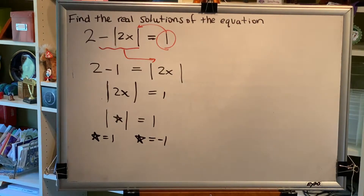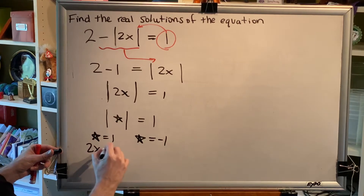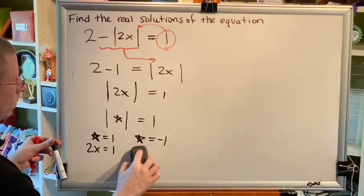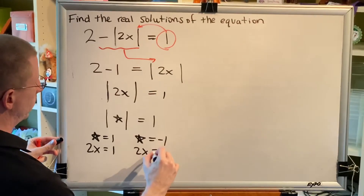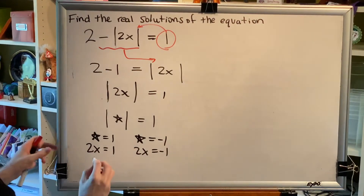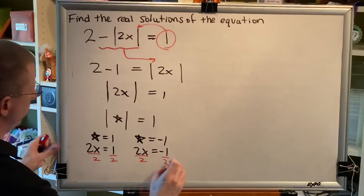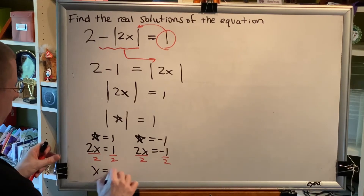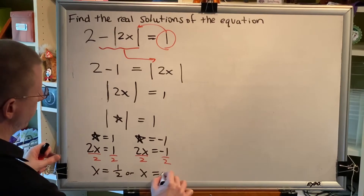Remember that for this problem, star used to be 2x. So we can now replace each instance of star with 2x. To solve for x, we just divide by the coefficient — divide by 2 on both sides of both equations — and we get two solutions: x equals 1/2, or x equals negative 1/2.